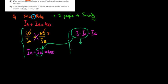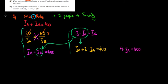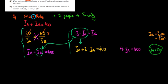So income of Andre plus 3 times income of Andre equals 400 euros, meaning 4 times the income of Andre equals 400 euros. Therefore, the income of Andre is 100 euros, and the income of Bernard is 3 times as much, equal to 300 euros. That's how we split the money.